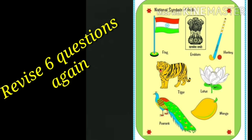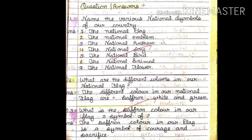Now let us repeat all the questions. Your first question: the various national symbols are national flag, national emblem, national anthem, national song, national bird, national animal, and national flower. The national flag has three colors: saffron, white, and green.